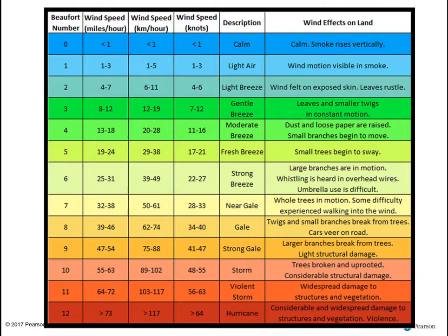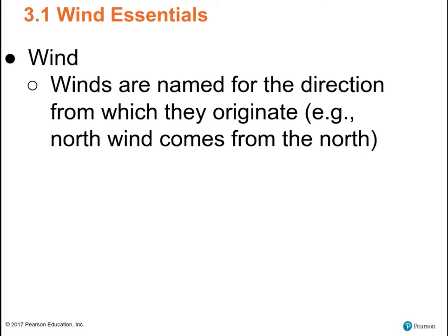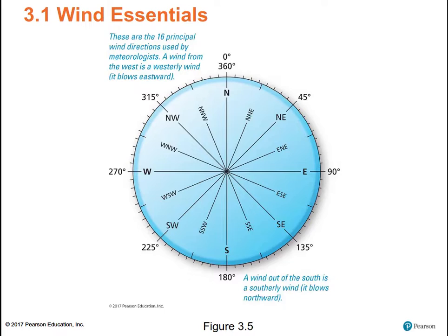Winds are named for the direction they come from. Like that kid who moved into your class from Texas that you called Tex, a wind blowing from the north is a north wind. A wind blowing from the south is a south wind. Wind directions include north, south, west, and east.